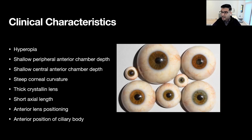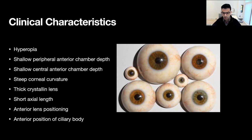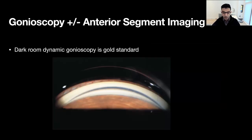Patients with plateau iris — another mechanism driving angle closure glaucoma that we'll discuss later — often don't follow these classic clinical characteristics. As such, really any patient coming in for a glaucoma assessment should be considered a candidate for angle closure glaucoma. With that in mind, direct visualization of the anterior chamber angle with dynamic gonioscopy in a dark room is and will likely continue to be the gold standard for determining angle closure.